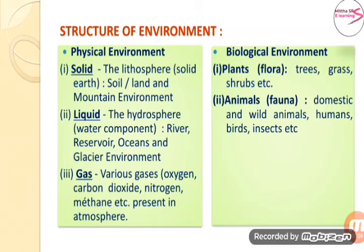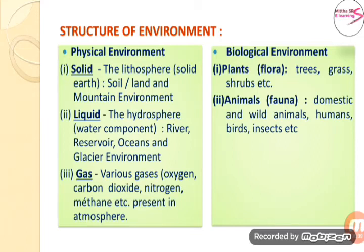Various gases like oxygen, carbon dioxide, nitrogen, methane, etc. are present in the atmosphere. The second type of structure is biological environment. It consists of different plants and animals. Plants, that is flora — examples include trees, grass, shrubs, etc. Animals, that is fauna — includes domestic and wild animals, humans, birds, insects, etc.